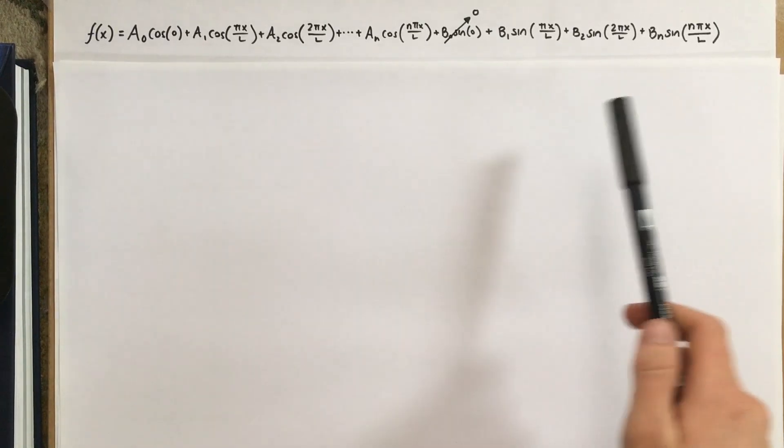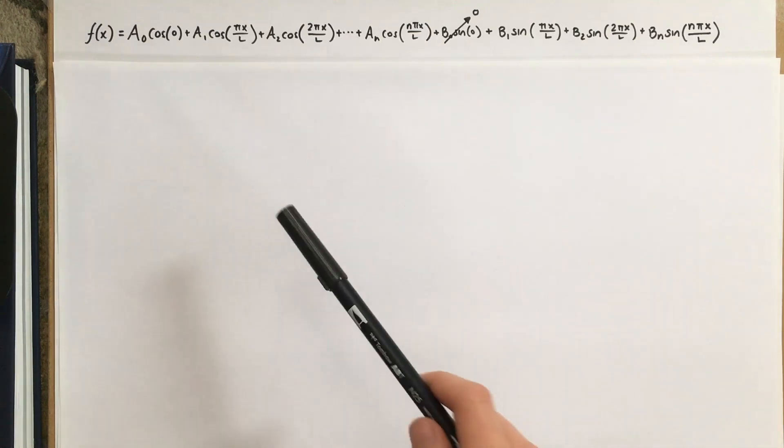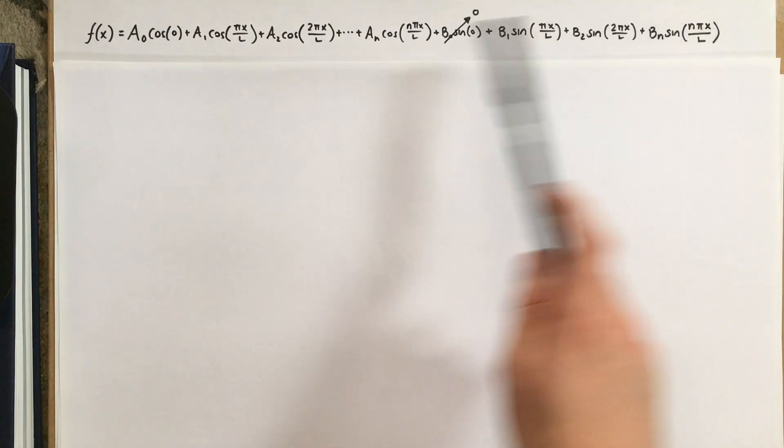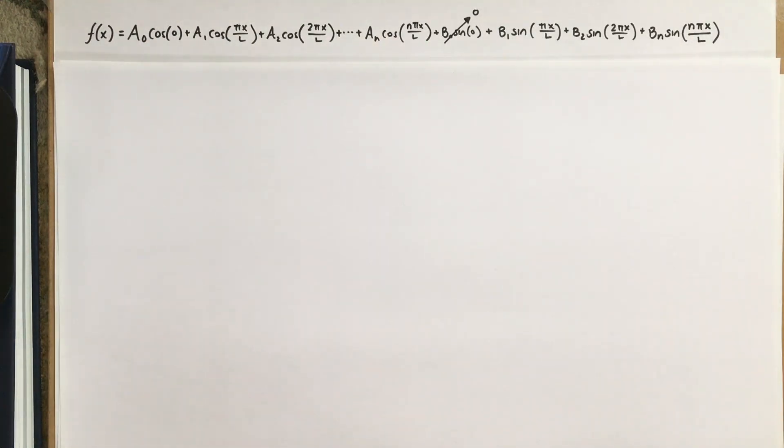It just so happens that every one of these trig terms in this big summation thing is orthogonal to all others. So this is orthogonal to all of these, and all of these, and this is orthogonal to all of these, and all of these, and so on.